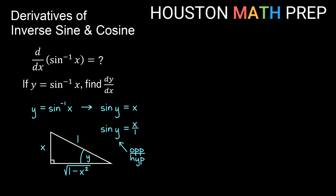Now let's move to the derivative part. We rewrote y equals inverse sine of x as sine of y equals x, so let's take the derivative of that equation using implicit differentiation, differentiating the left side and then the right side. The derivative of sine y is cosine y, and since it contains a y term, the chain rule tells us we also multiply by dy/dx. The derivative of the right side is simply 1.